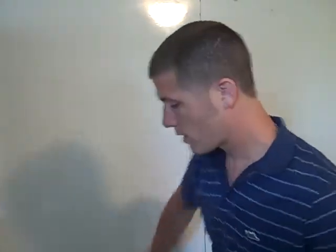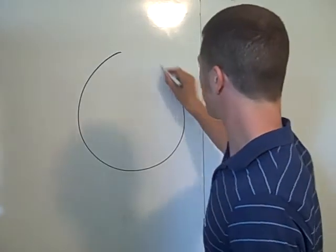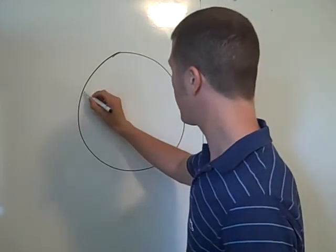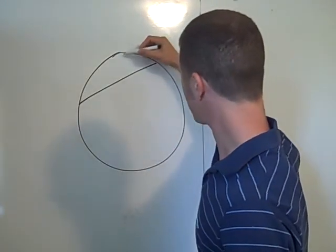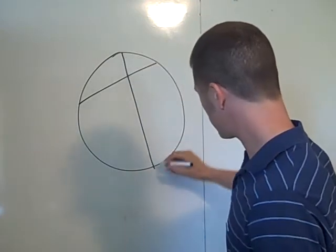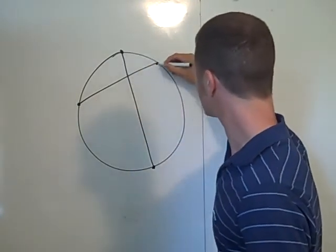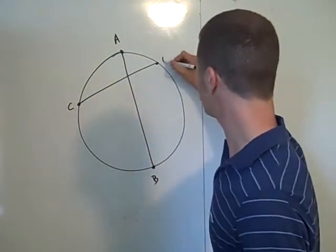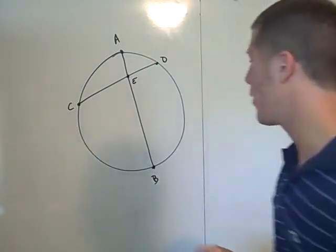All right, so consider a circle with two chords that intersect inside that circle. We'll do it like this and like that. And let's go ahead and label these. Here's my chord AB, here's my chord CD, and they intersect here at point E. Okay,